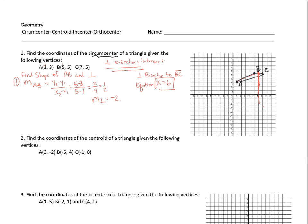The slope of AB is 1/2, going up 1 over 2 to reach point B. We want the perpendicular slope, which is negative 2, so the bisector goes down in that direction. We also need the midpoint of AB since it bisects the segment — we need to know where the middle is.